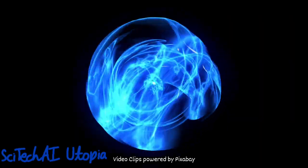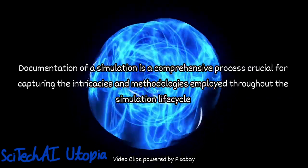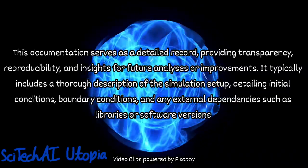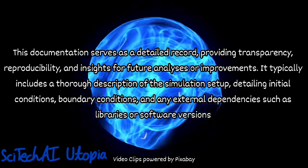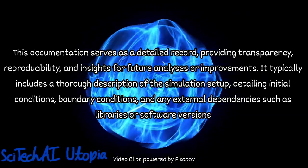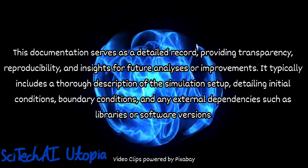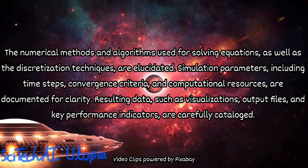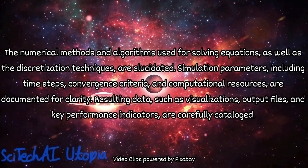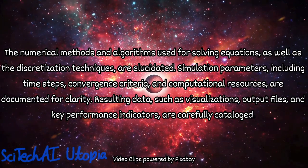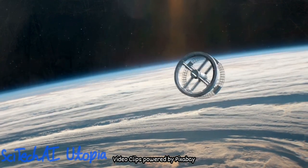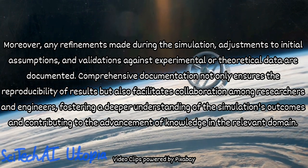Next is documentation. Detailed documentation is crucial for transparency and reproducibility. This involves documenting the assumptions made in the model, the parameters chosen, and any modifications to the code. It also includes keeping track of the simulation setup, such as initialization conditions and boundary conditions. For example, documentation might include a comprehensive report outlining the specifics of the aircraft wing simulation, including the governing equations, mesh details, validation and verification procedures, and a record of any refinements made. This documentation serves as a reference for researchers, enabling them to understand, reproduce, and build upon the simulation. Next up is communication. Sharing results with the scientific community is a vital step. This involves preparing research papers, presentations, or reports summarizing the simulation, its findings, and the implications for the broader field of study. Communication facilitates knowledge exchange and contributes to the collective understanding of the simulated phenomena.